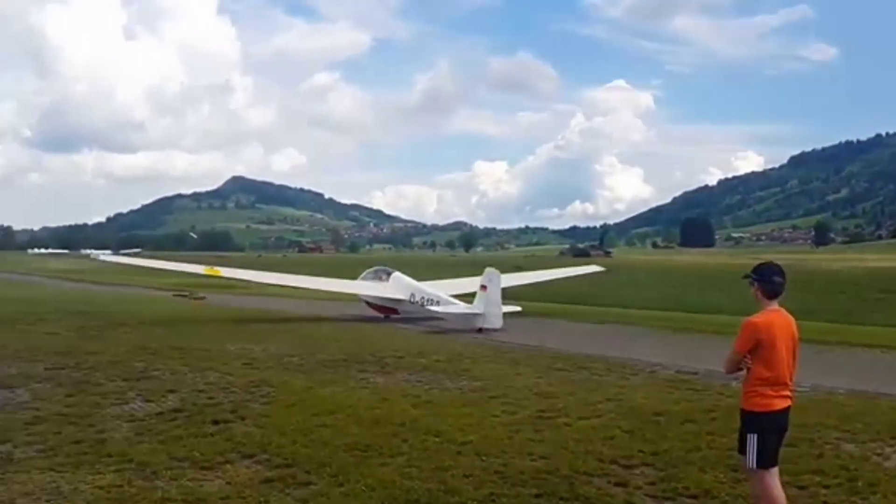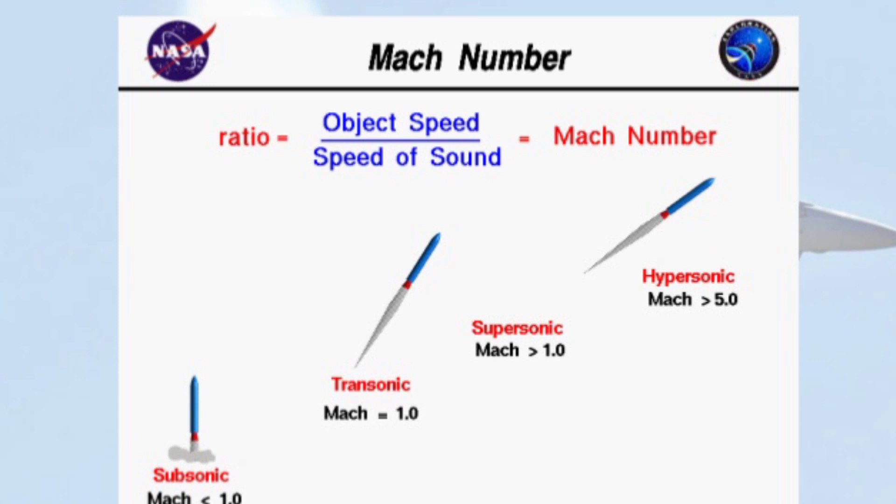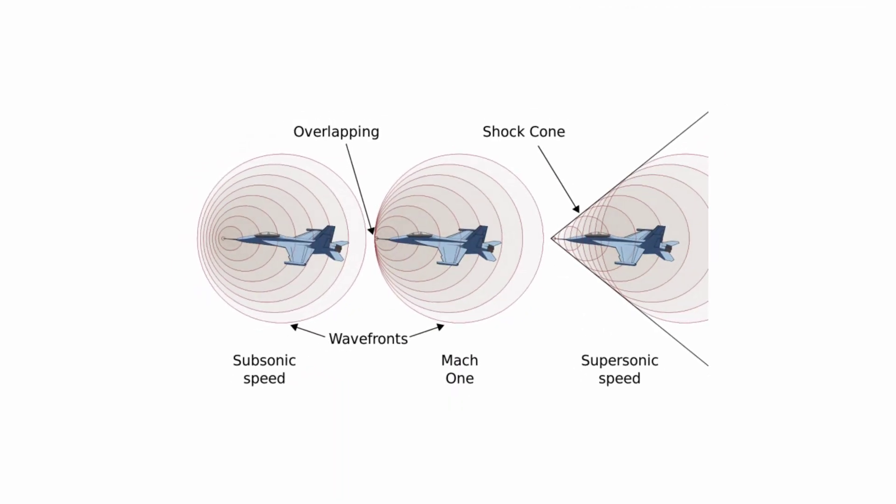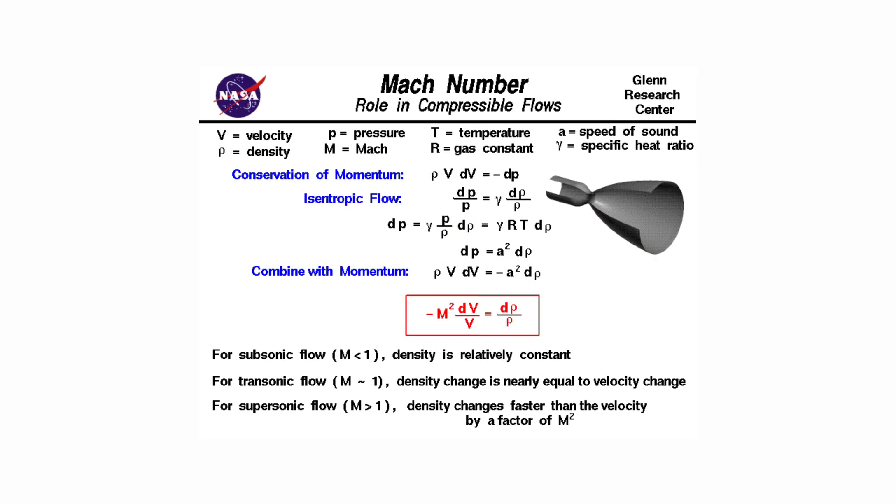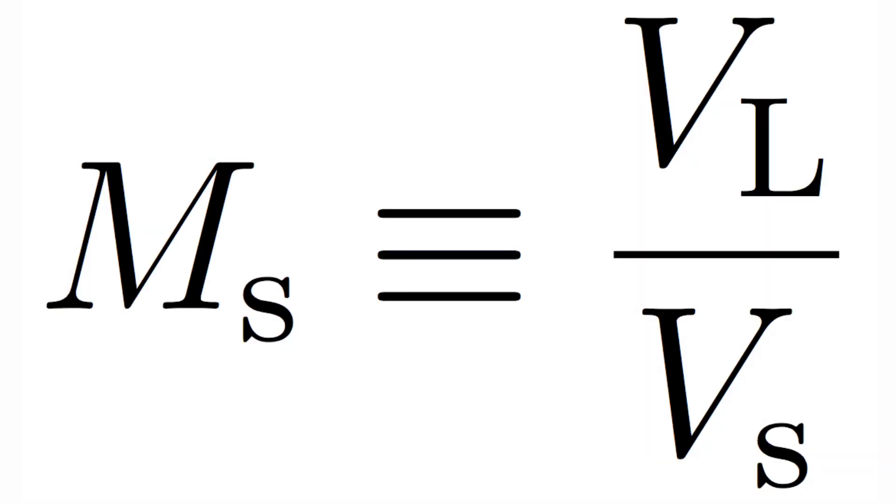A sonic boom is a kind of pressure wave created when an object changes its speed from below Mach 1 to Mach 1, where Mach 1 or Mach number is the ratio of the speed of the object to the speed of sound. As soon as an object approaches and crosses the speed of sound,